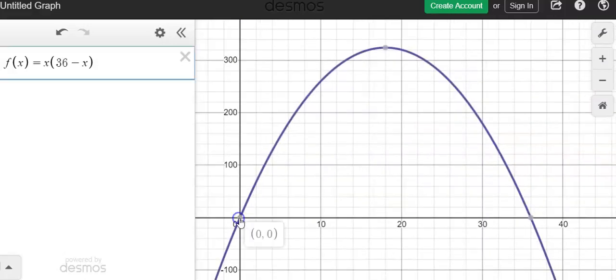Now with Desmos, I can click on my x- and y-intercept right here in this x-intercept, and I can click on my maximum point. And I see that when x, remember x represents the length, when x is 18,